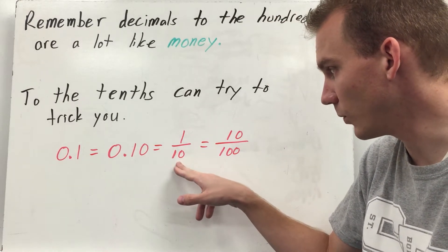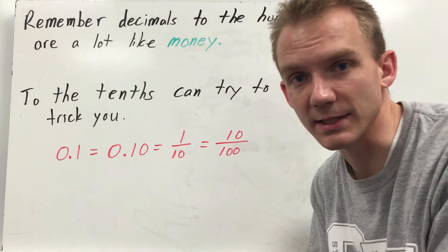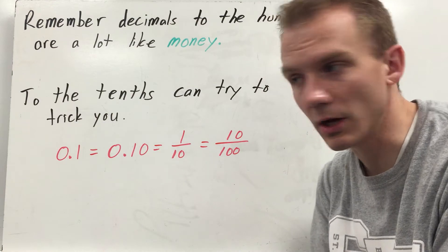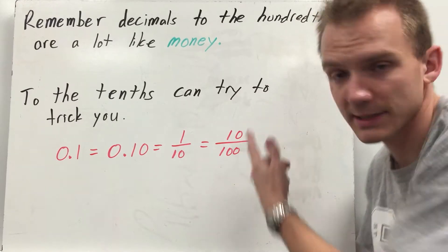In fraction form it looks like this, one tenth, ten hundredths. Think about it like this, one tenth is like a dime, ten cents. It takes ten cents to make a dollar, or it takes a hundred pennies to make a dollar. Ten cents is worth ten pennies. So one dime, ten cents.